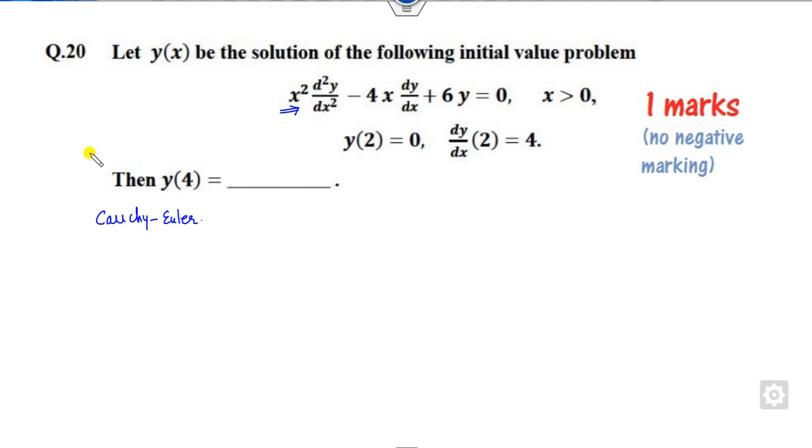You remember this is the Cauchy-Euler form. Whenever there is an equation of this form, that is Cauchy-Euler form. How can you solve this? You can use x = e^z, but there is no need to use this. I will tell you a very simple shortcut trick.